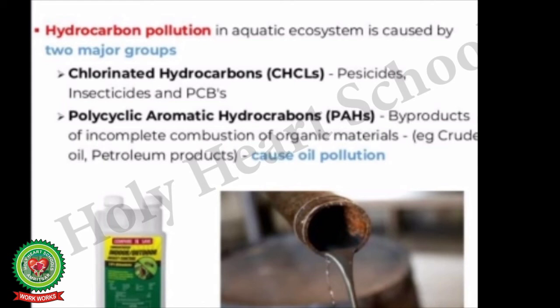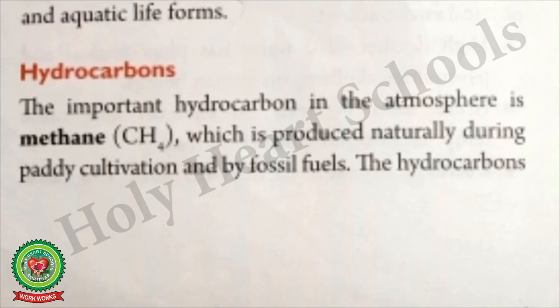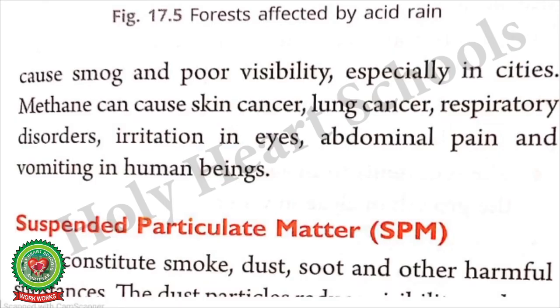Hydrocarbon pollution in aquatic ecosystems is caused by two major groups: chlorinated hydrocarbons such as pesticides, insecticides and PCBs, and polycyclic aromatic hydrocarbons, which are byproducts of incomplete combustion of organic materials. Crude oil and petroleum products are causes of oil pollution. The important hydrocarbon in the atmosphere is methane, which is produced naturally during rice cultivation and by burning fossil fuels. Hydrocarbons cause smog and poor visibility, especially in cities. Methane can cause skin cancer, lung cancer, respiratory disorders, eye irritation, abdominal pain and vomiting.